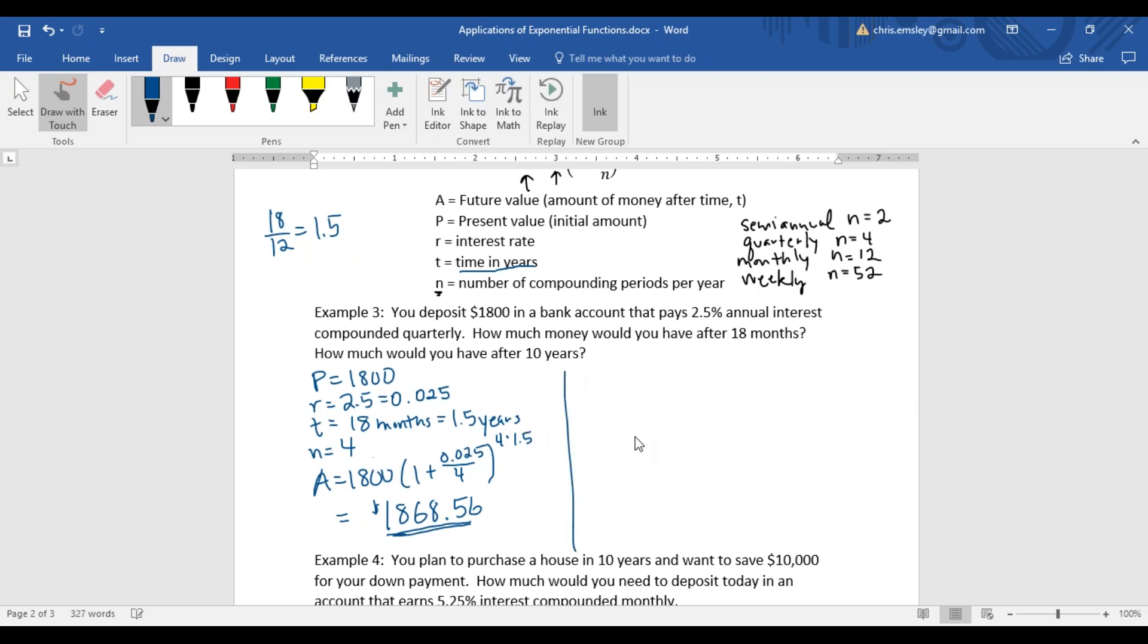This one has a follow-up question. How much money would you have after 10 years? We'll use the same formula. The only difference will be we'll change our t value, our time. The future value, the amount of money we're going to end up with is still 1800 times 1 plus 0.025 divided by 4 because it's compounded quarterly. This time our exponent is 4 times 10 for 10 years.